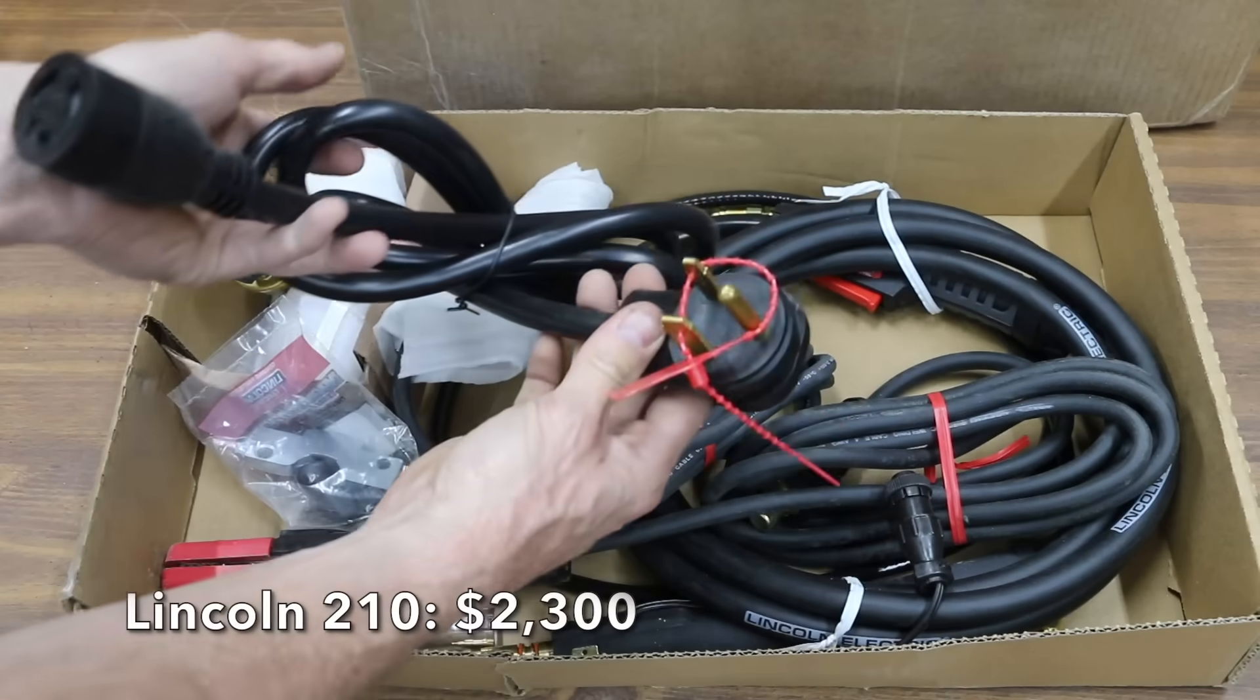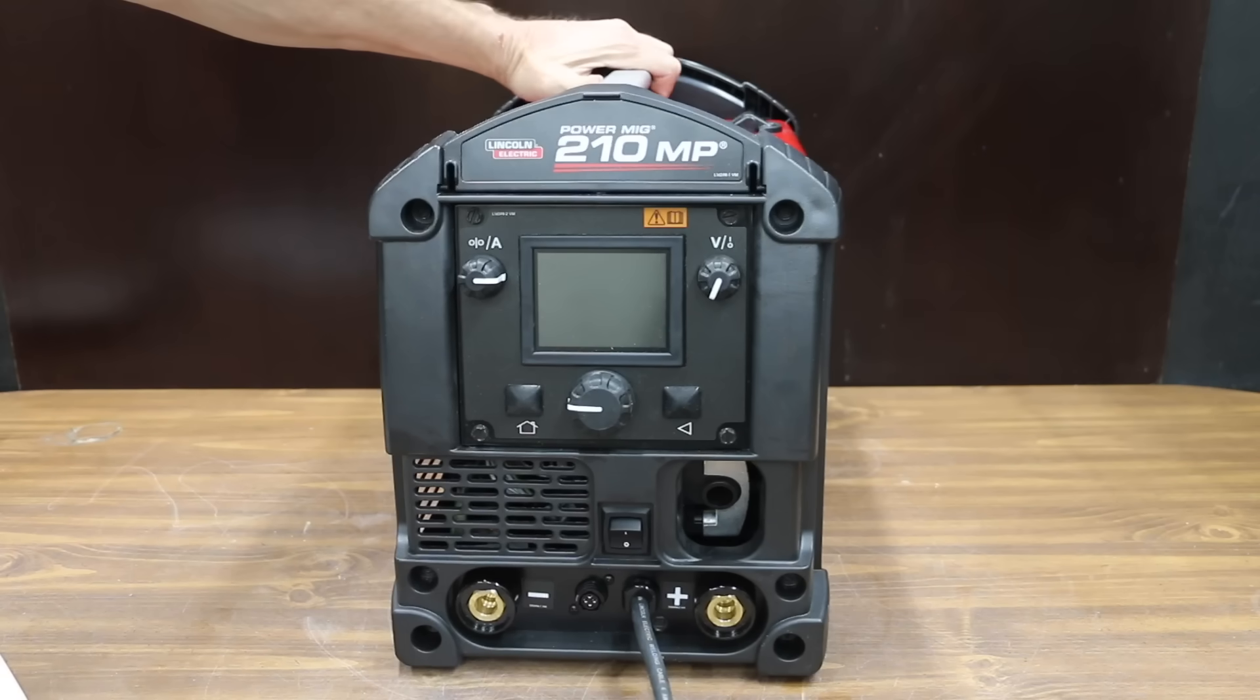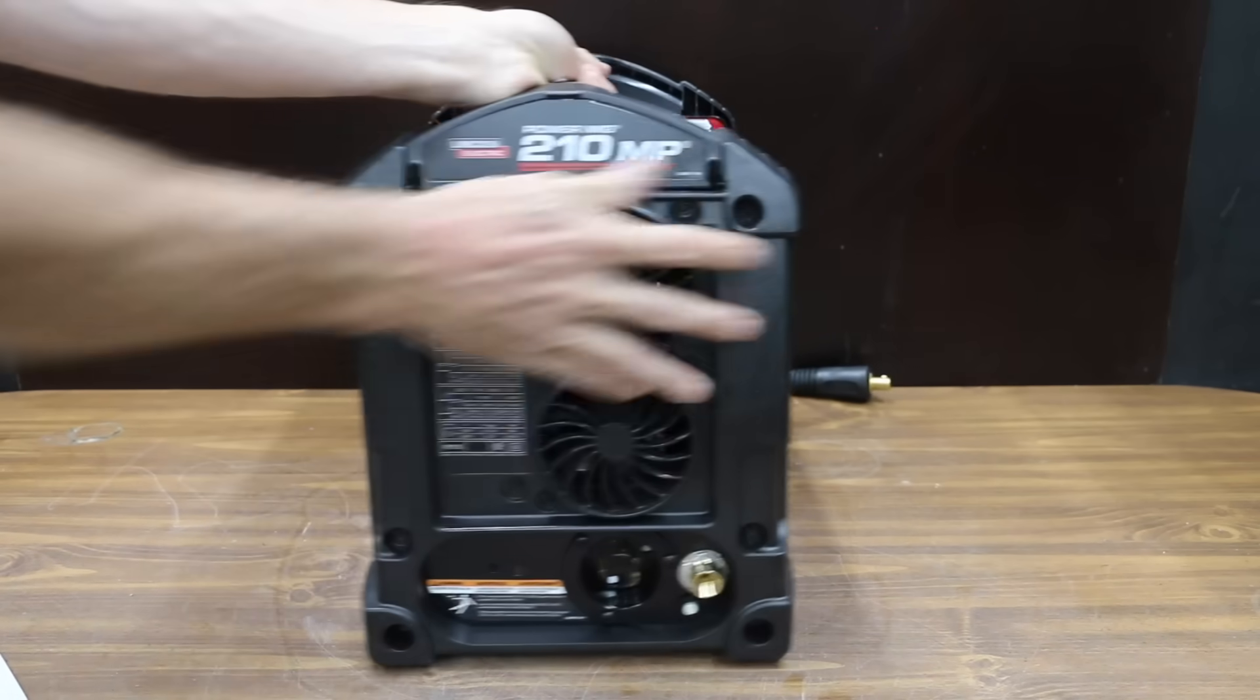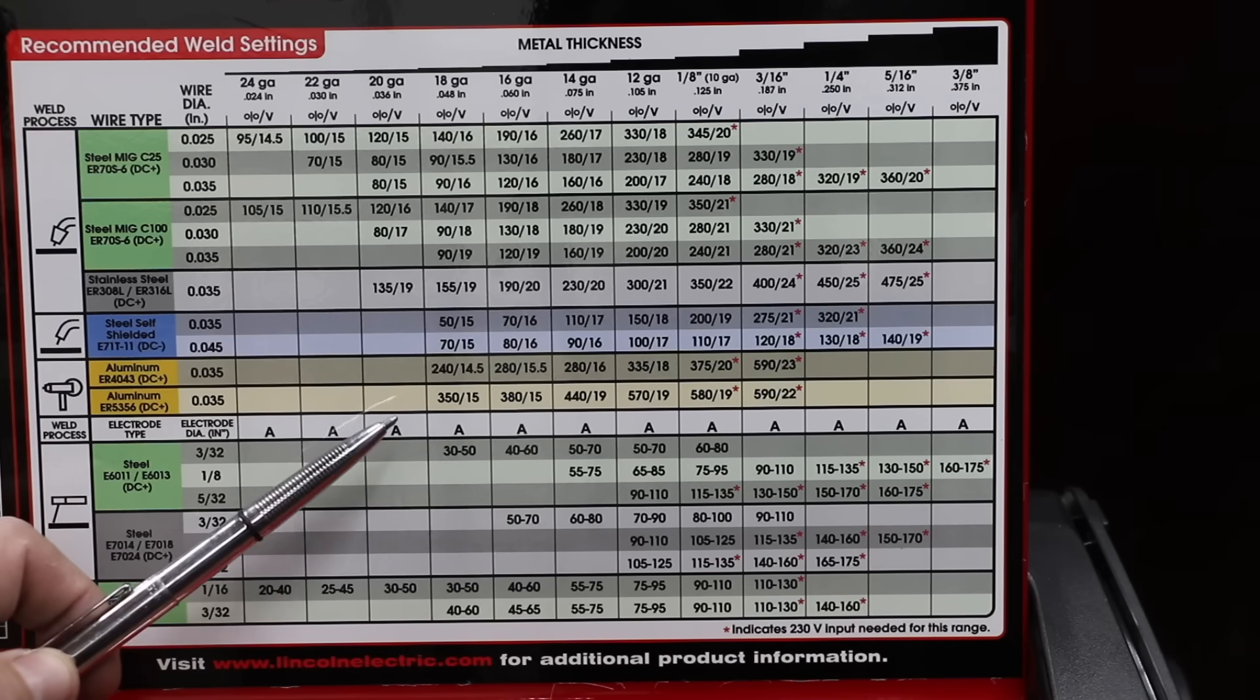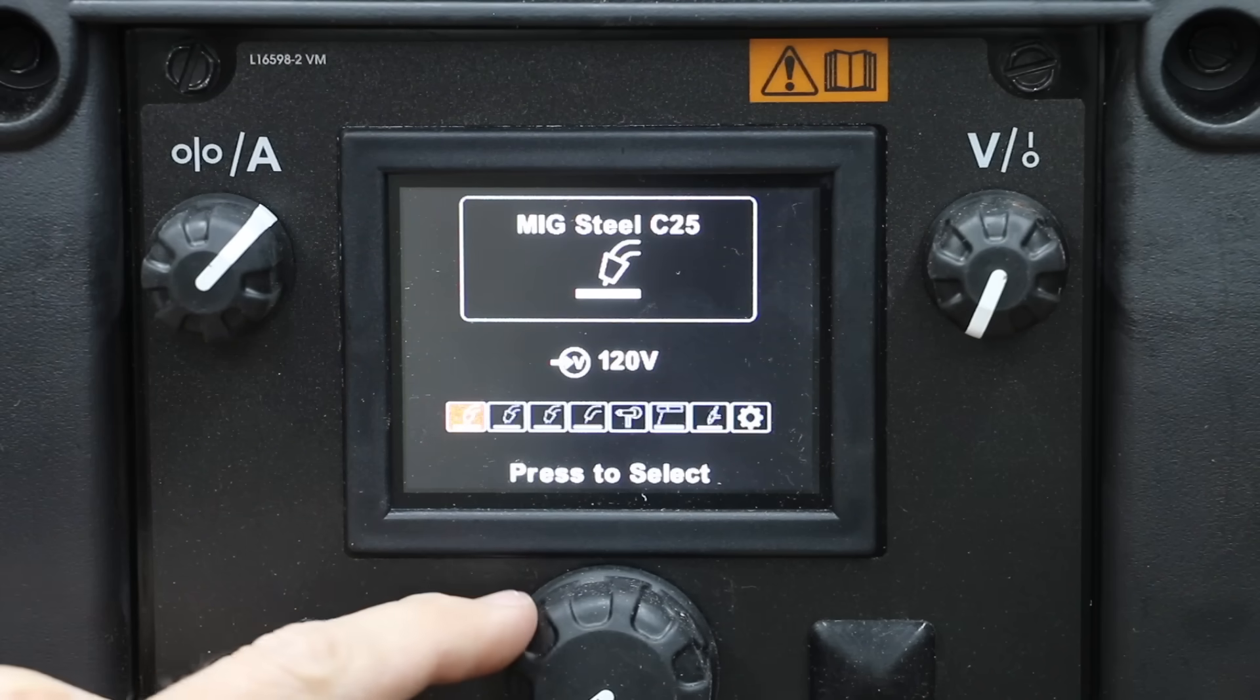At an eye-watering price of $2,300 is this Lincoln 210. As I've said many times before, this is not a sponsored channel and I purchased all the welders. The Lincoln 210 is designed for MIG, stick, TIG, and flux core welding. Inside the side panel of the welder is a very helpful reference chart. You can weld up to 3-inch material using MIG. It's dual voltage offering 110 or 220 volts. The Lincoln is assembled in Mexico.